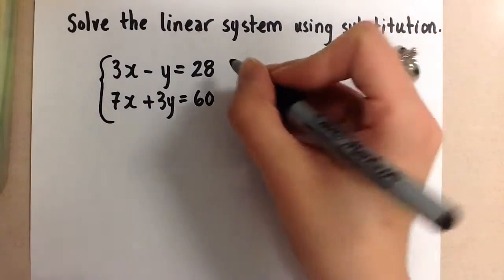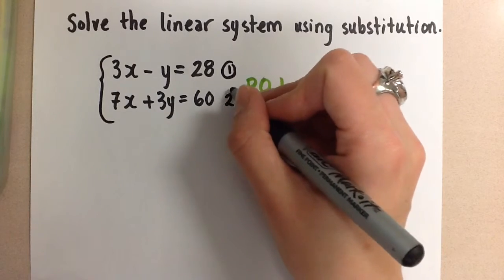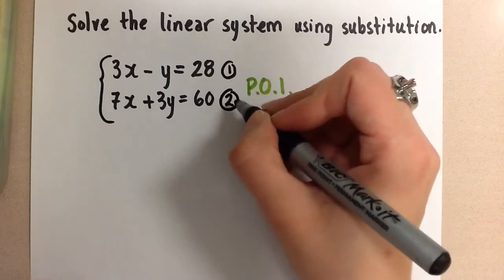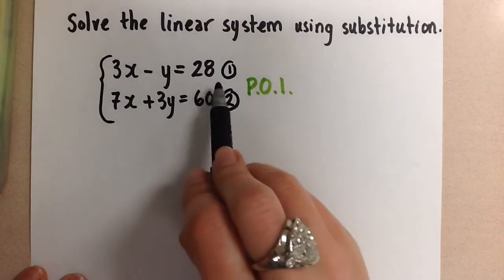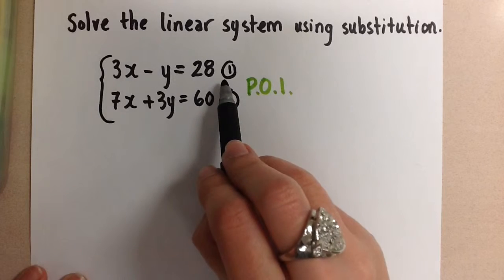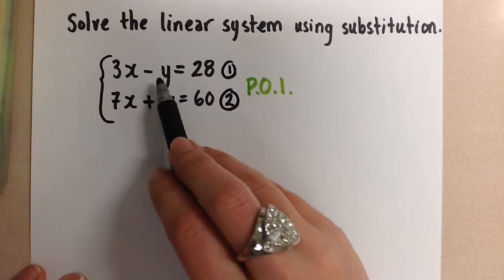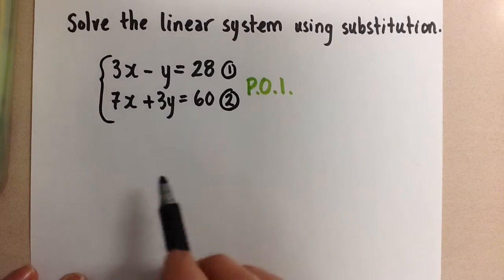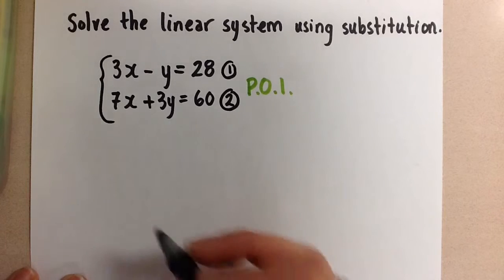So to start, let's label one line, line one, and the other one line two. So we have two equations that we've labeled one and two. We're going to choose the equation that has the easiest variable to isolate. So when I look at these two equations, equation one is the one I'm going to choose because y only has a coefficient of a negative one. So to me, that's the easiest variable to isolate here in the two equations.